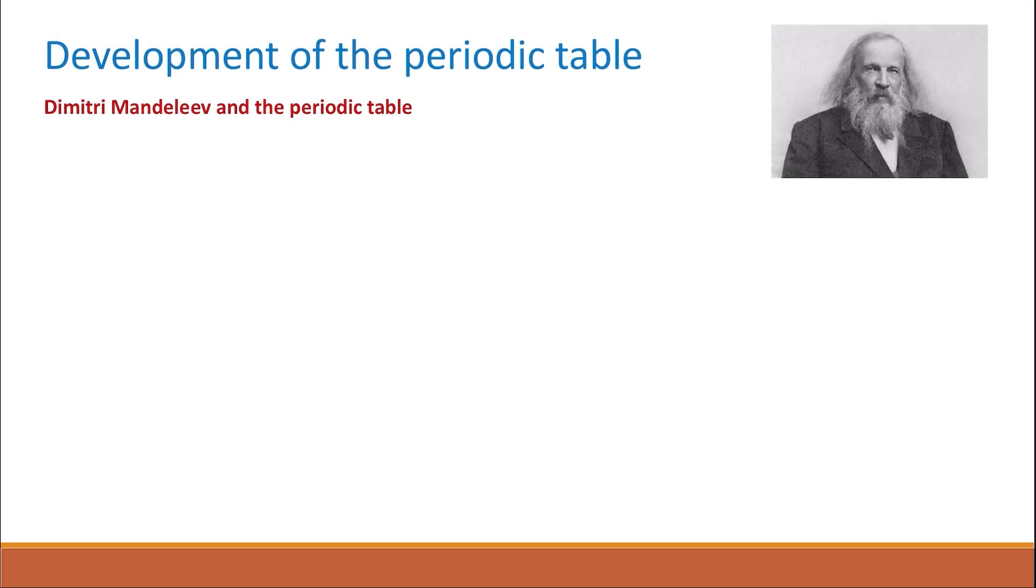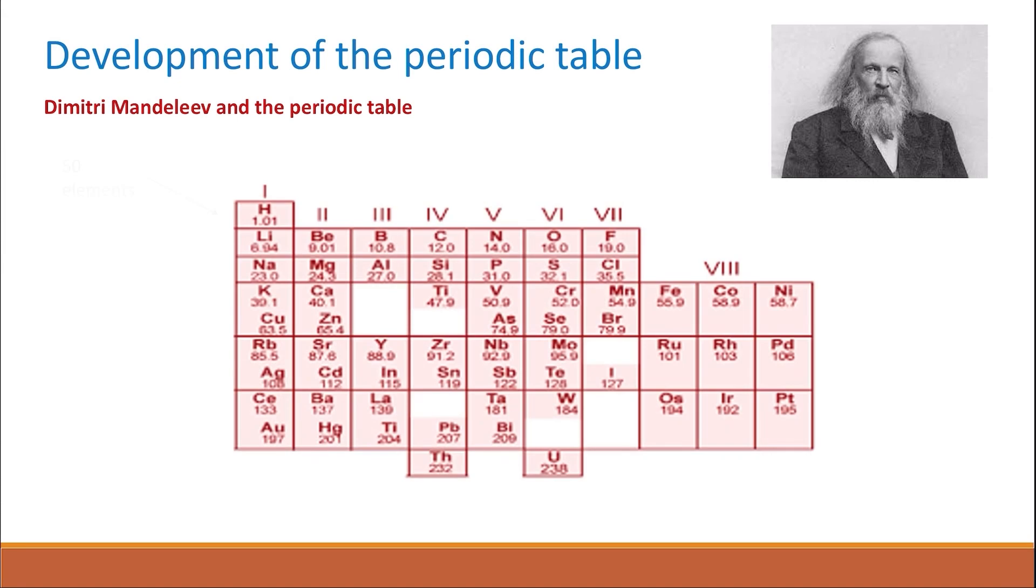He organized the 50 known elements according to their atomic weights, not atomic number which wasn't discovered then. He placed elements with similar properties in the same column.